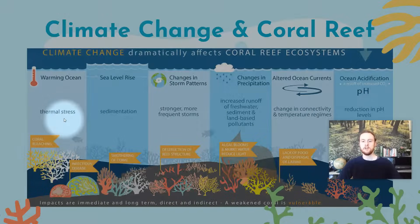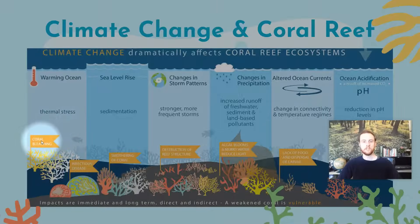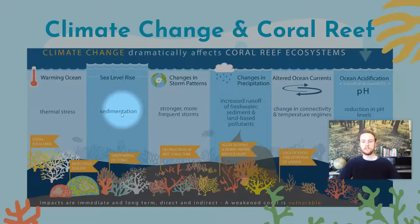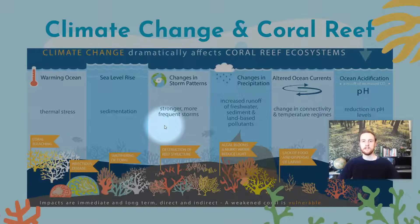Ocean warming causes thermal stress to the coral reef ecosystem. It can cause fish and other organisms that populate it to become stressed and unable to survive there, lead to coral bleaching, and make organisms more prone to disease. Sedimentation is another problem — as sea level rises, sediment can smother the coral or prevent the photosynthetic algae living in the coral from receiving the sunlight they need. Changes in storm patterns, as storms become more severe and prolonged, can cause physical damage to the reef, with huge waves bashing and breaking it apart.